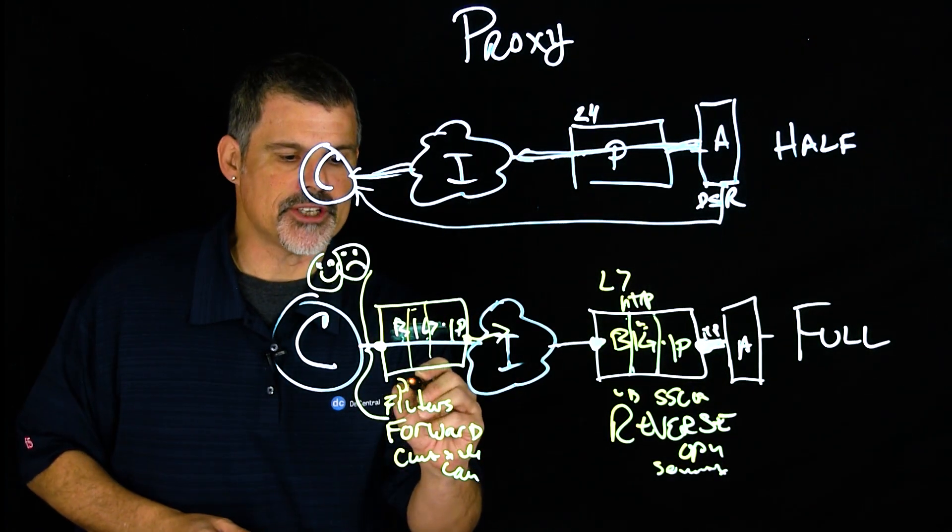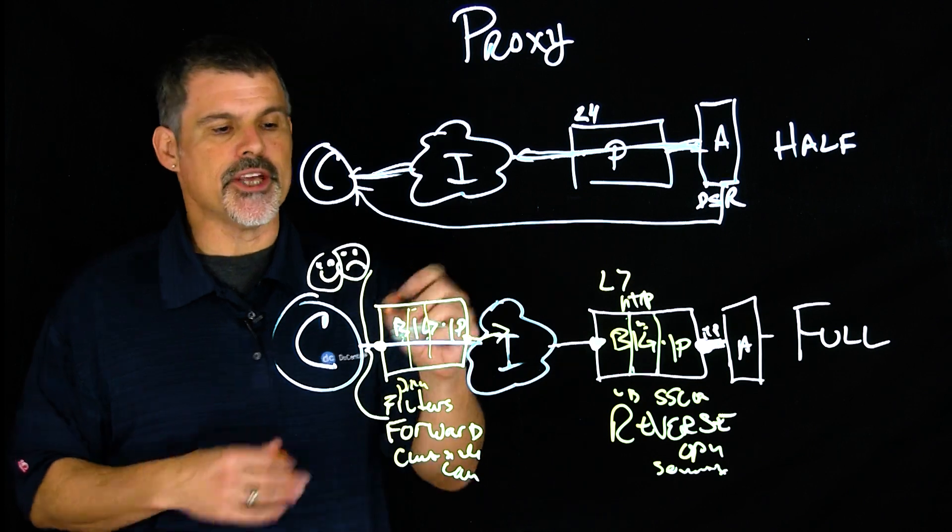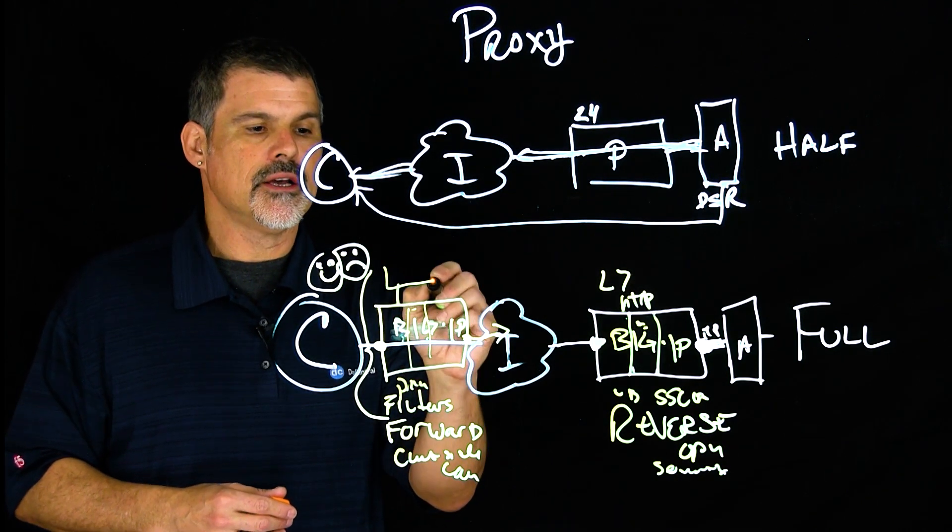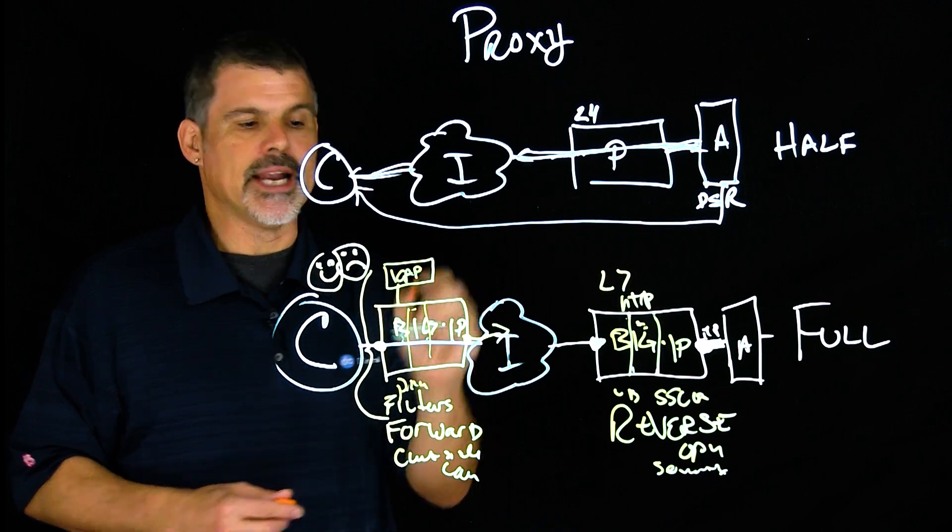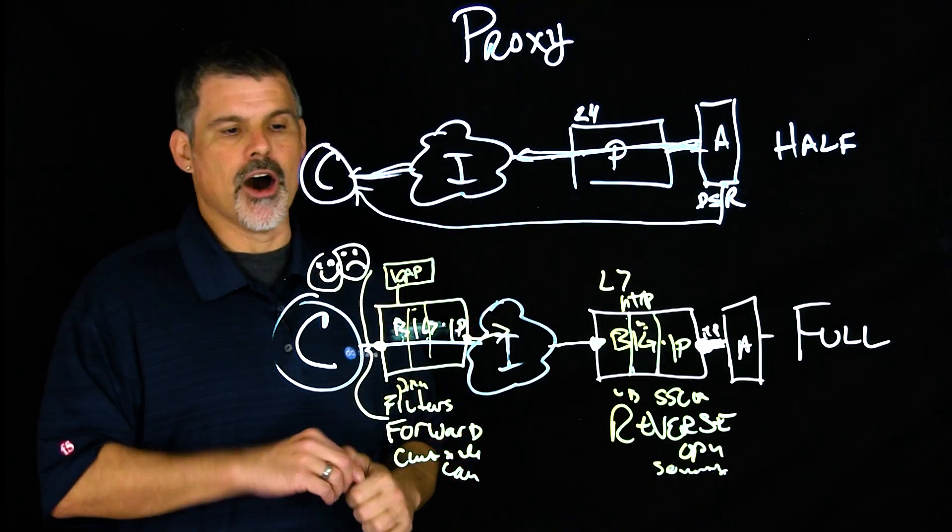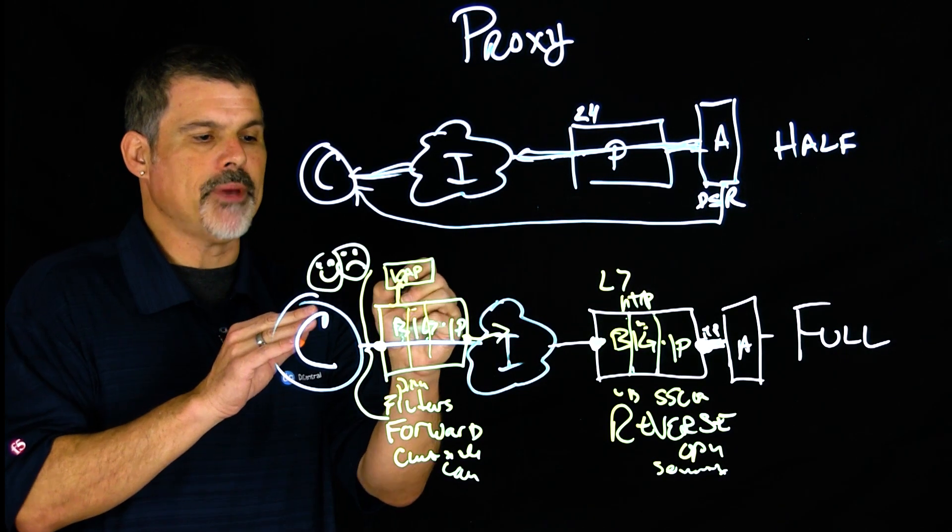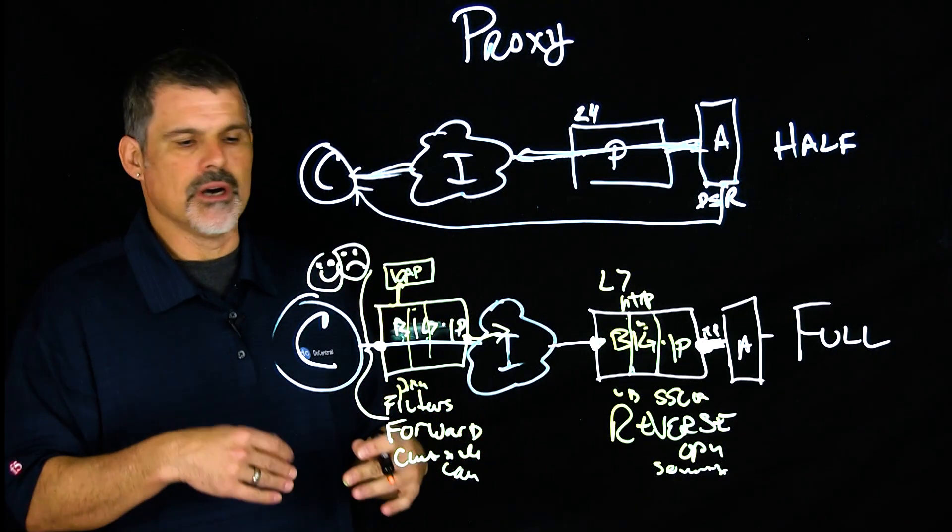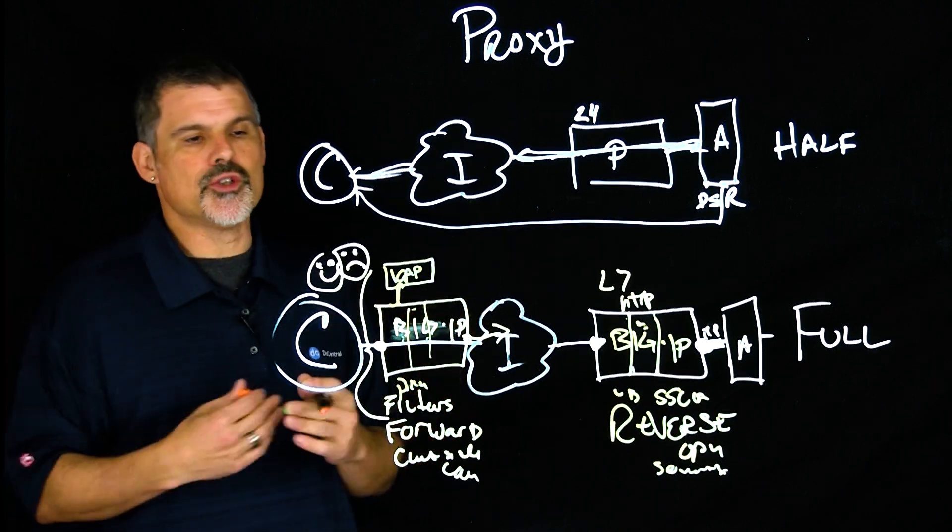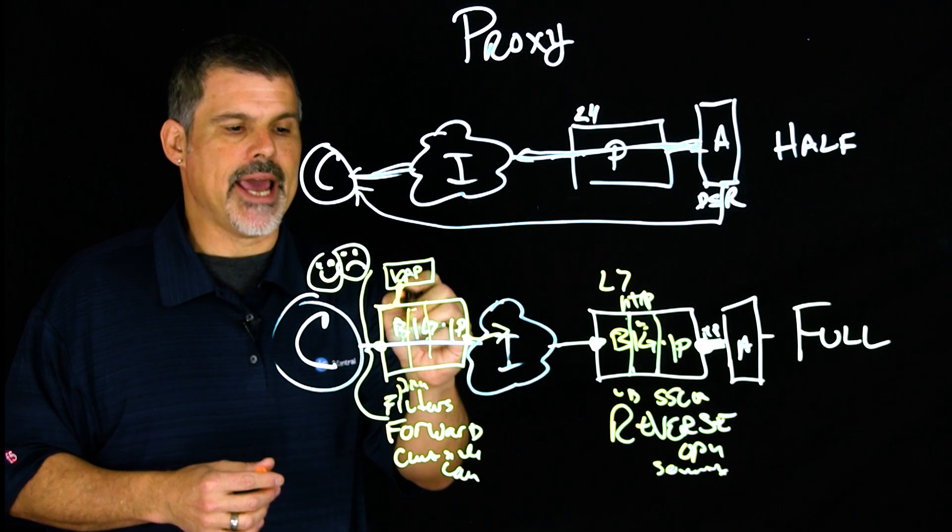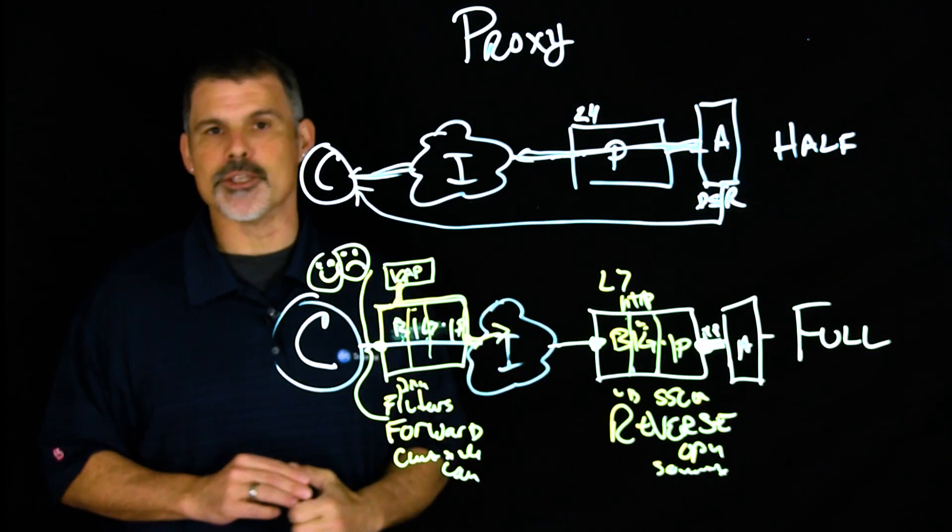And certainly privacy, security, those sorts of things. And then finally, in this situation, you can also add some third-party inspection tools. So maybe you have an ICAP server hanging off here as a third-party inspection. You might want to send the traffic up here, attachments, potential malicious content, those sorts of things. Send it up to the ICAP, make sure it's all good, and then send it out on its merry way.